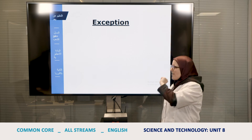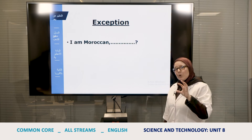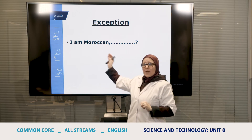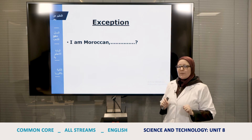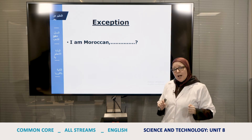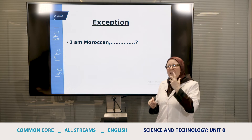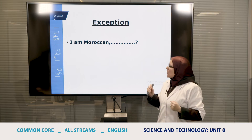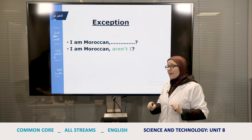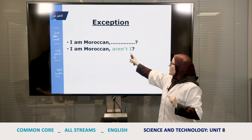Before the practice, we have one important exceptional case. Normally, according to the rule, for 'I am Moroccan,' you would say 'I'm not I?' — but that sounds awkward and very heavy. That's why it's considered an exception. So we say 'I am Moroccan, aren't I?' Whenever you have 'I am,' the question tag becomes 'aren't I?'